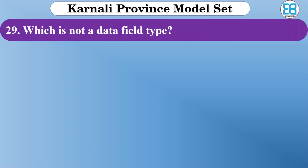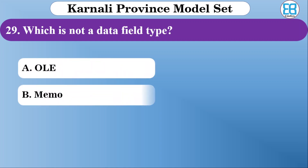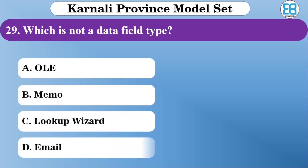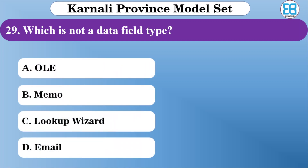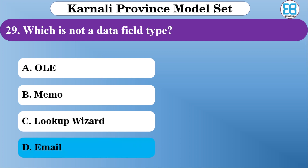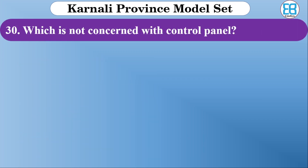Which is not a data field type? The options are OLE, memo, lookup, and email. The correct option — the invalid one — is email. Email is not a data field type.